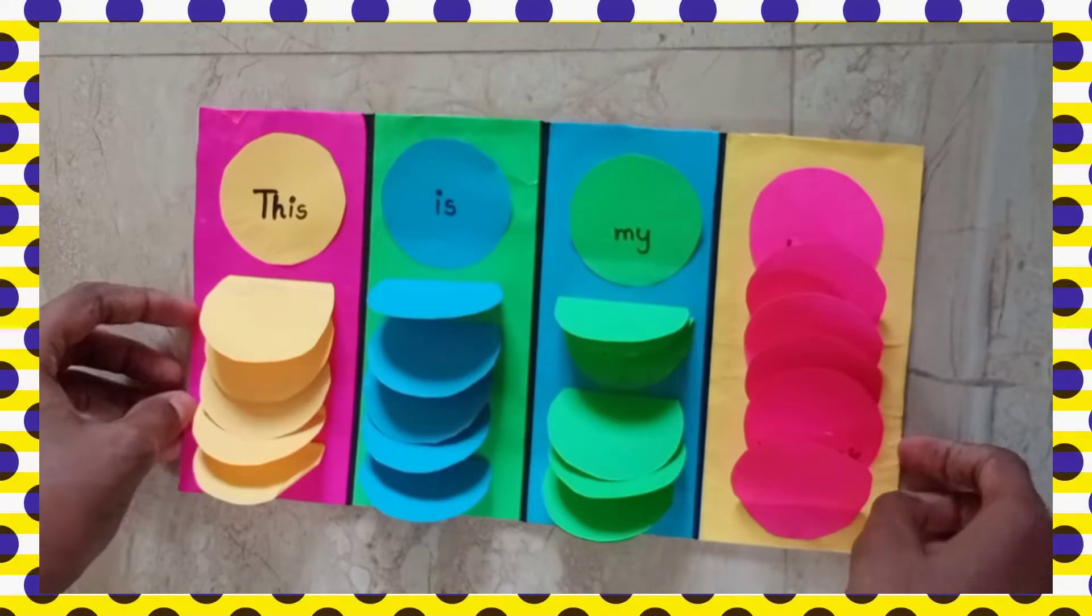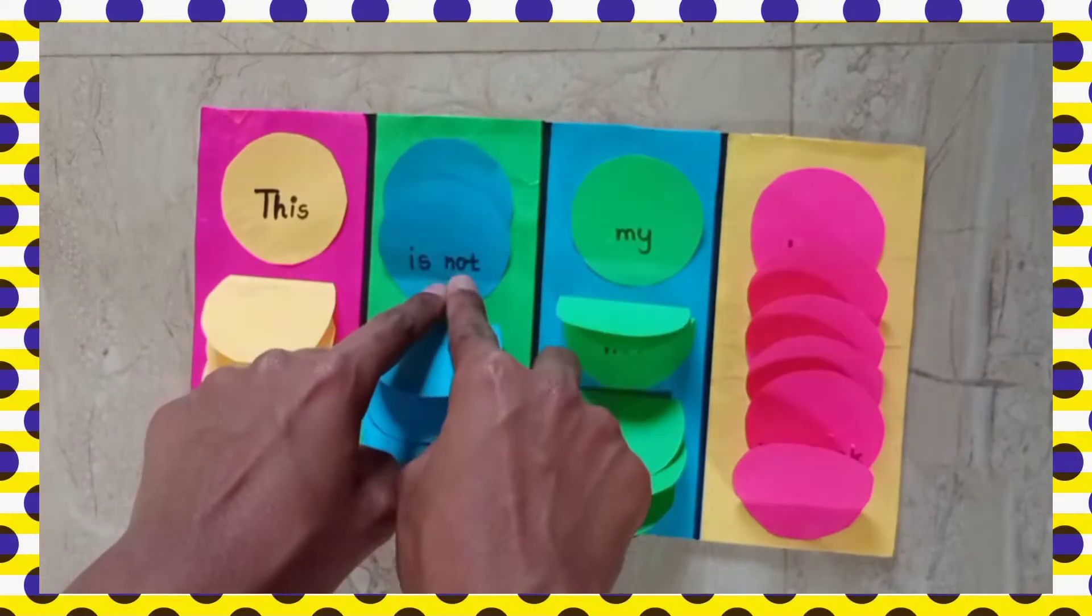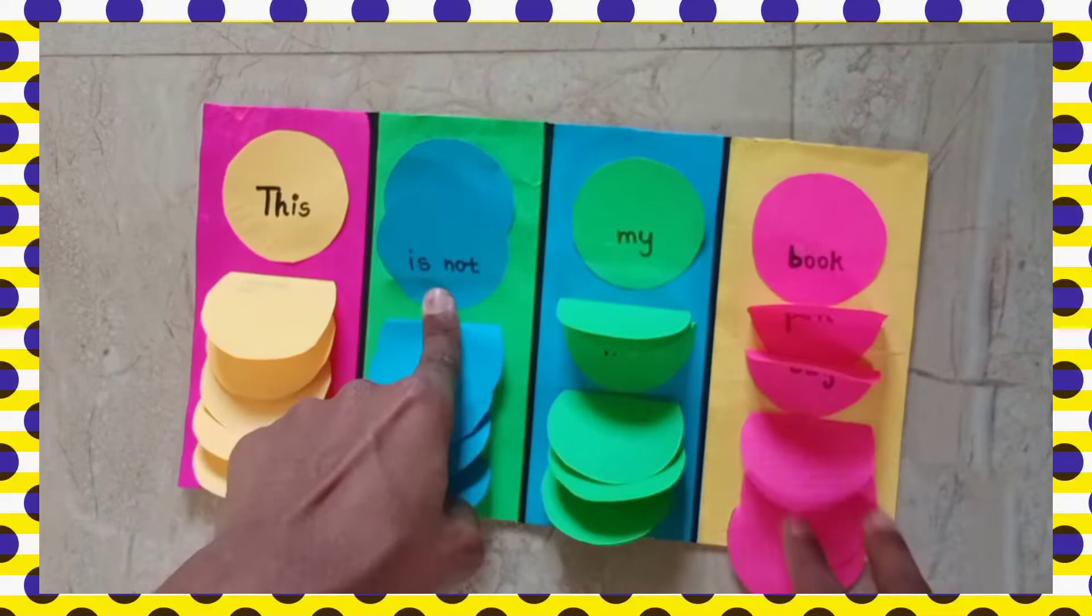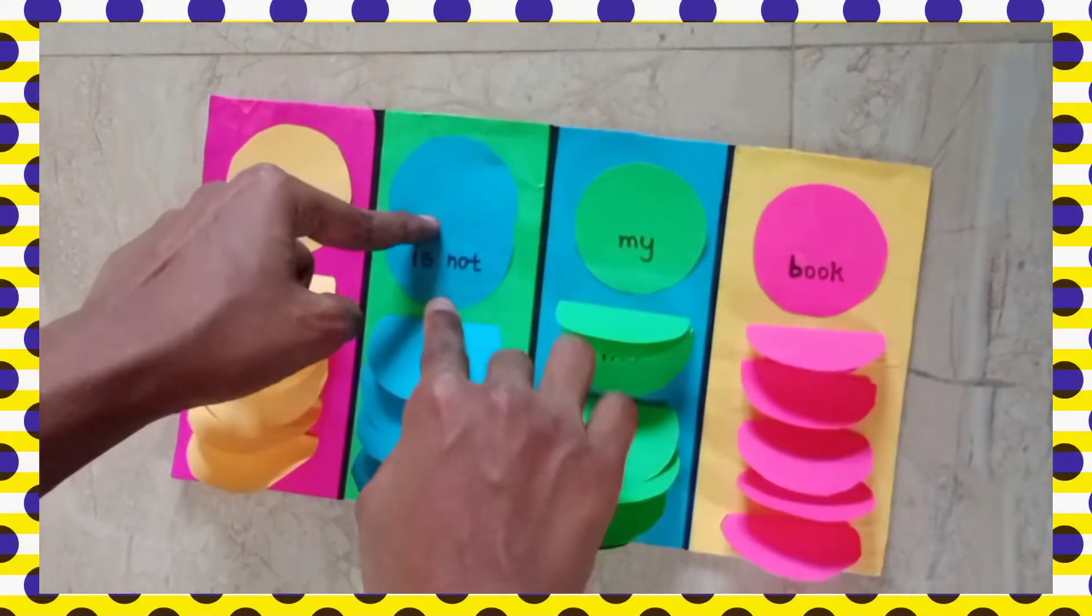If we change any circle in any column, the sentence changes. Let me show you: This is not my book. This is not my pen.